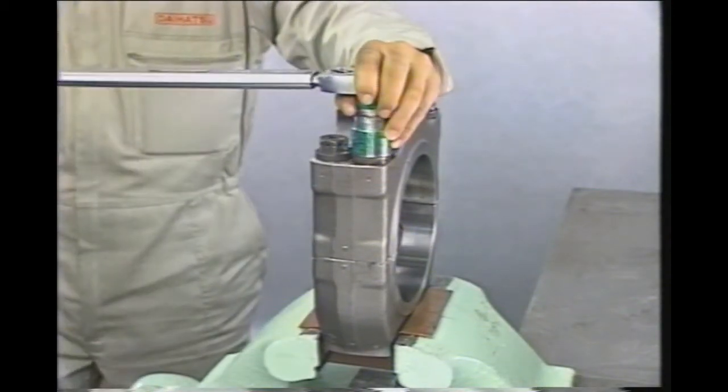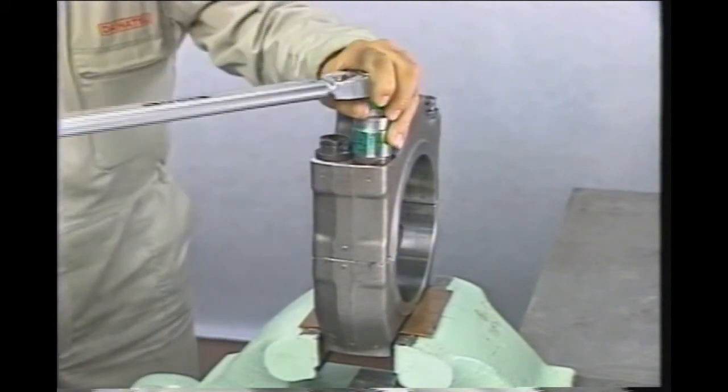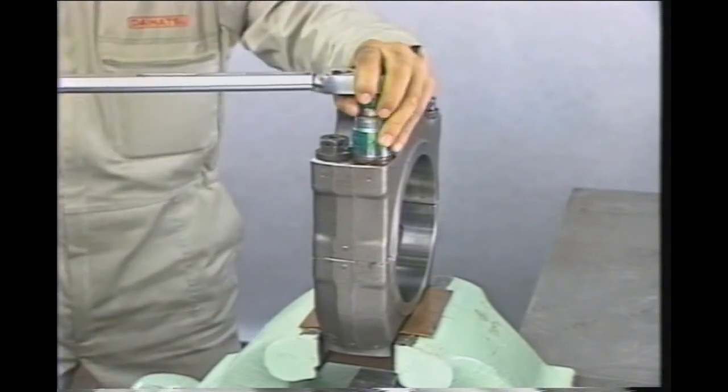Before putting a torque A mark on a new bolt, put the old bolt number on it and tighten it a couple of times so that it fits to the torque B mark.